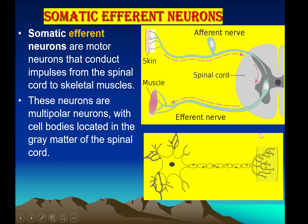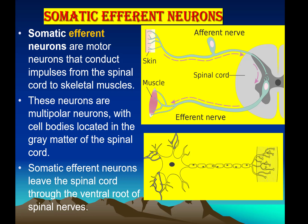Here you can see the cell body of the neuron, and from multiple poles dendrites are originated — that is why they are called multipolar neurons. Somatic efferent neurons leave the spinal cord through the ventral root, from the ventral or anterior horn of the spinal cord. So this motor neuron leaves the spinal cord through the ventral horn.